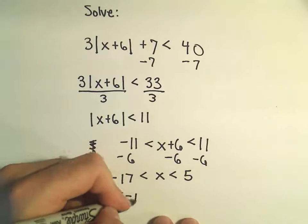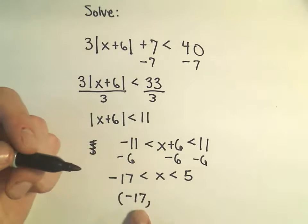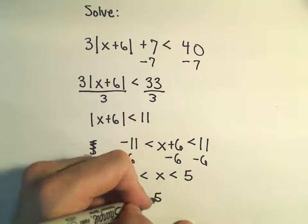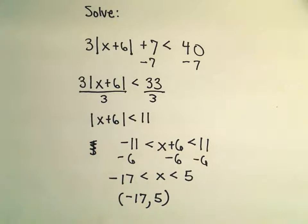So again, this is my solution. In interval notation, we could write that with parentheses from negative 17 up to positive 5.